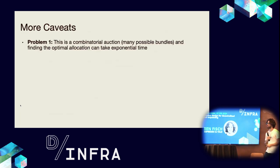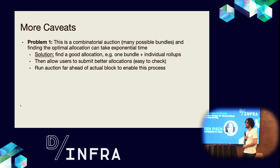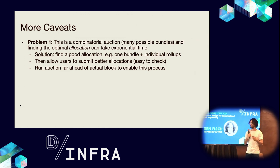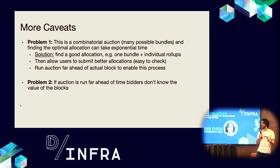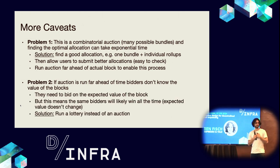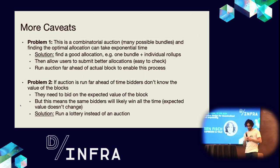There are more caveats. One problem is that this is a combinatorial auction — there are many possible bundles, and finding the optimal allocation can take exponential time. One solution is to find a good allocation, submit it, and then allow some time for people to submit better allocations, similar to fraud proof mechanisms. You can also run the auction far ahead of an actual block, but then bidders don't know the value of blocks and need to bid on expected value instead. Since the expected value doesn't change much, the same bidders may always win, which may be concerning — so a solution is to run a lottery instead of an auction.